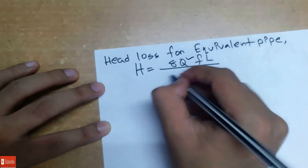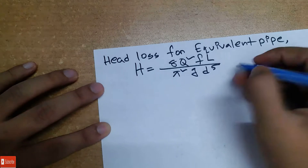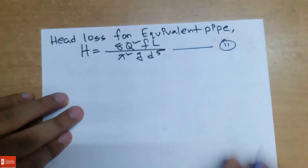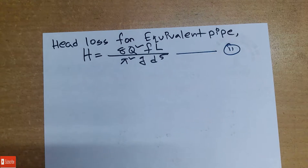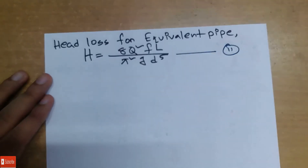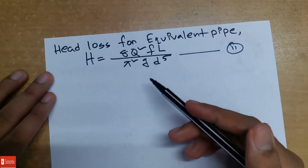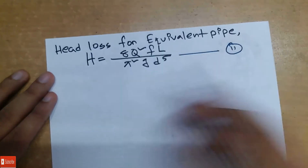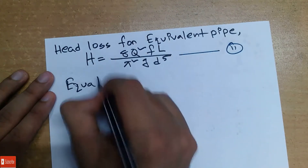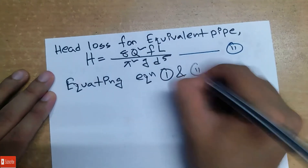I am going to show you the same equation as the equivalent pipe. Equation 2 equals the equation which we have to replace the head loss for the equivalent pipe, so that the head loss is the same and the discharge is the same.